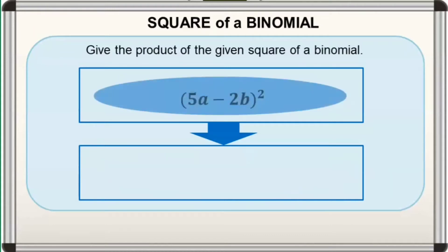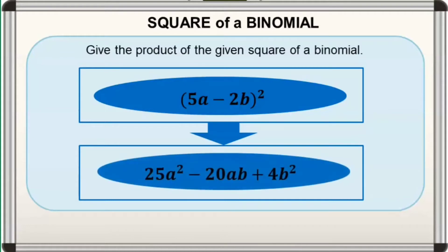And for the last one, it is equal to 25a squared minus 20ab plus 4b squared.